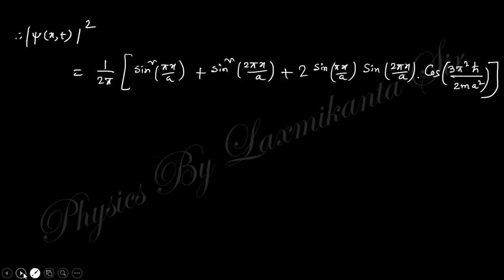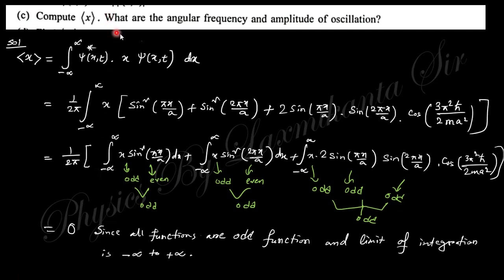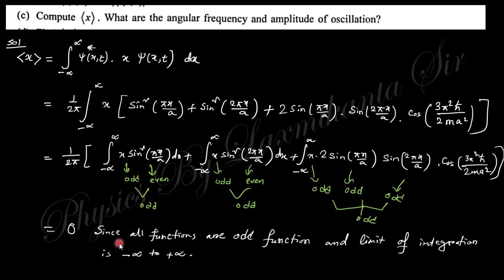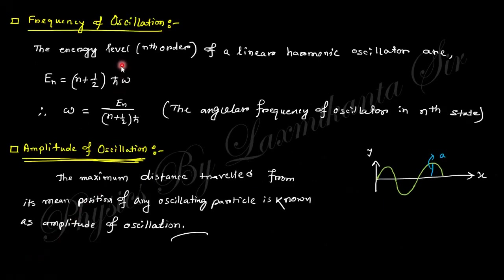Next, compute the expectation value ⟨x⟩, the angular frequency, and amplitude. The expectation value ⟨x⟩ involves products of ψ; all the integrands are odd functions over the symmetric limit from −∞ to +∞, so ⟨x⟩ = 0. Next, the frequency of the harmonic oscillator gives corresponding energy levels.